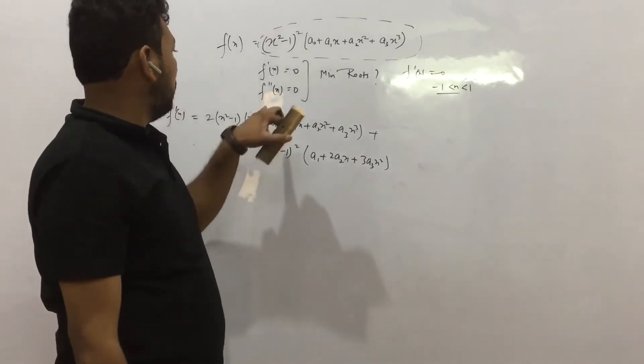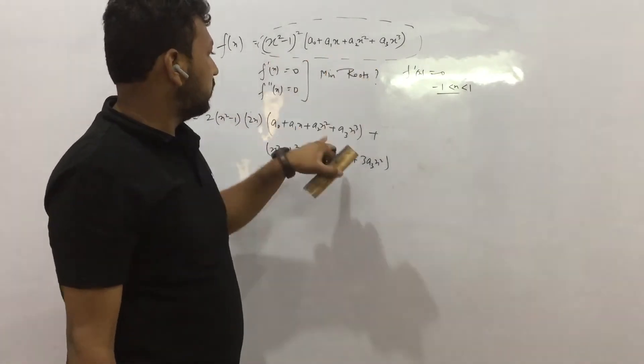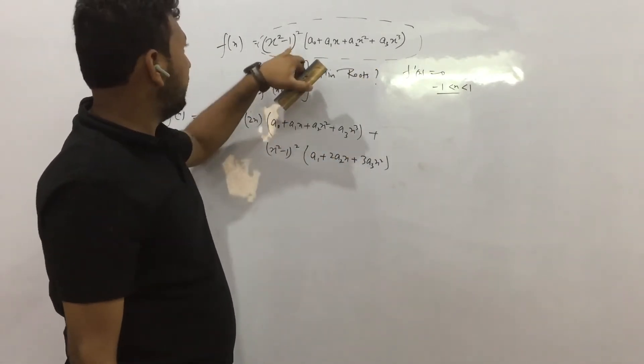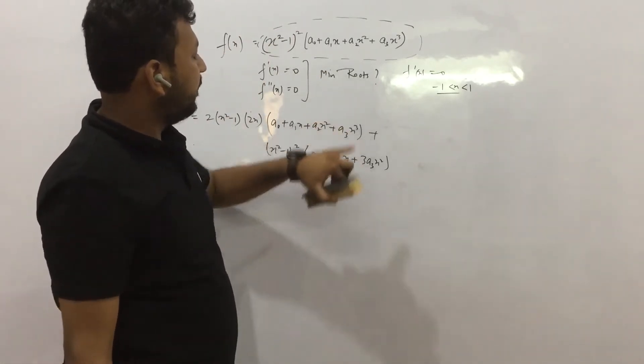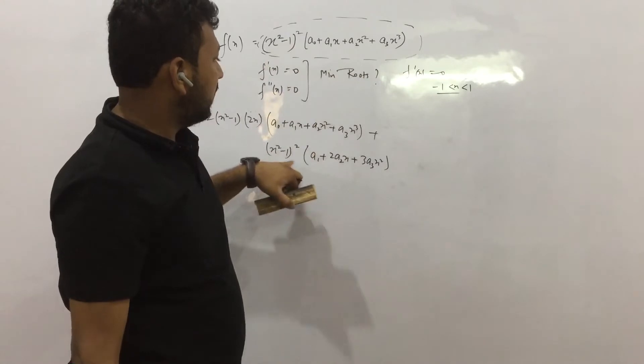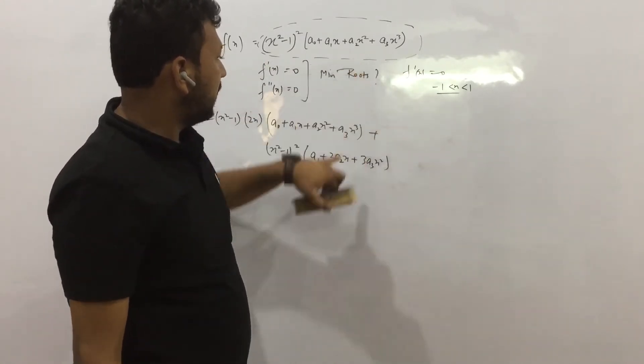So the derivative by product rule... The derivative of this, this remains constant. Yes. Derivative again by chain rule that we have done. And in the next step, this is constant. And again, this derivative is constant.